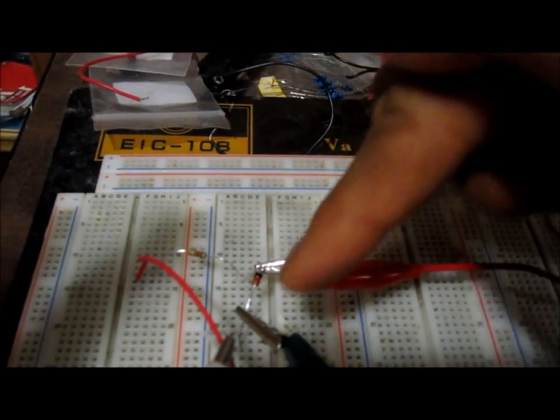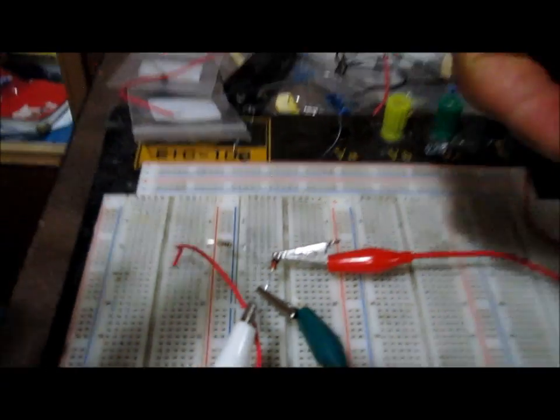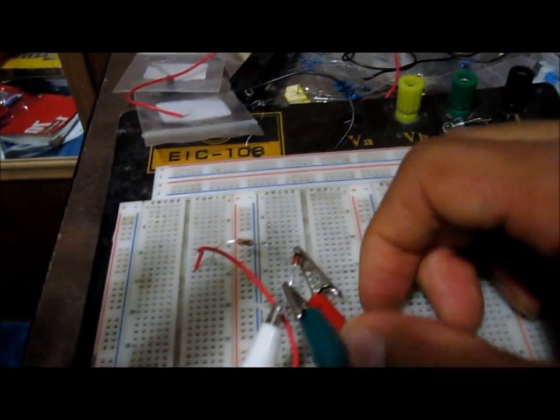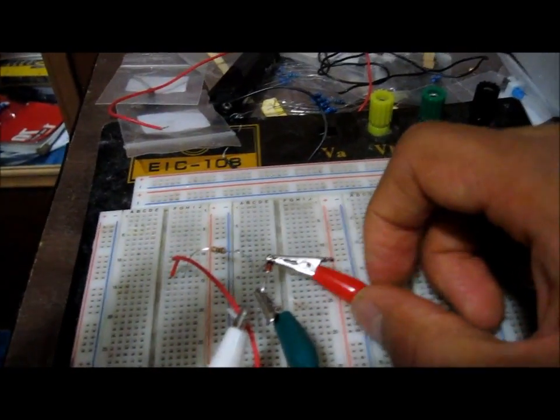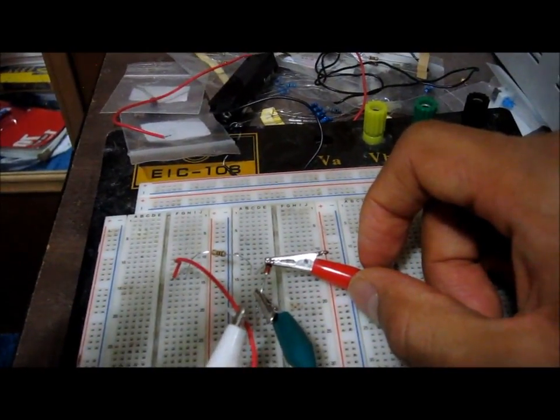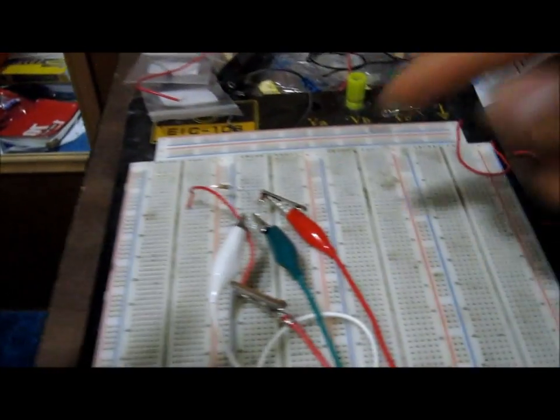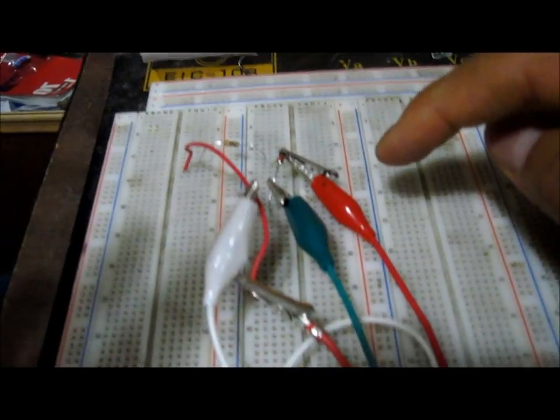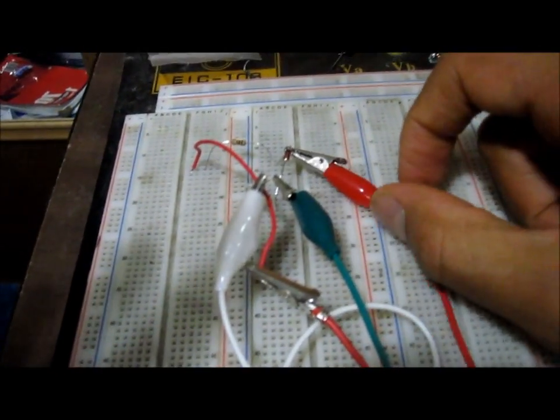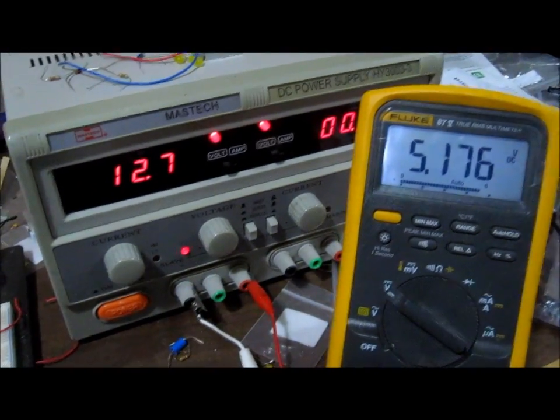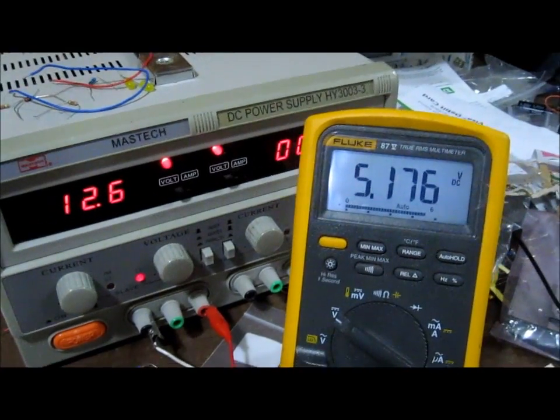Zener diodes come in many different breakdown voltage values. You can get any voltage level that you need to be regulated based on the Zener diode that you choose. This again is a 1N4733 and has a breakdown voltage of 5.1 volts, so it can function as a 5 volt voltage regulator.